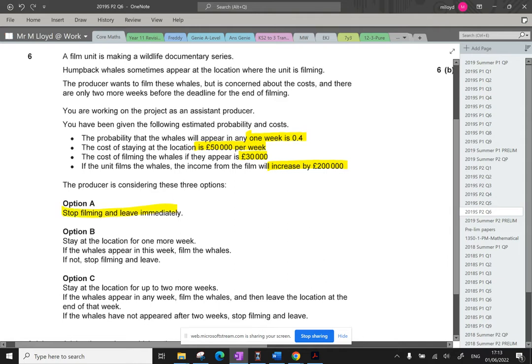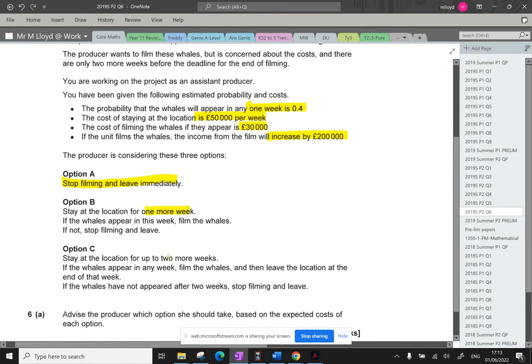Stop filming, leave immediately. Option B: one more week and see how they go. Option C: stay at the location for up to two more weeks. If the whales appear in any week, film the whales and then leave the location at the end of that week. If the whales have not appeared, stop filming and leave. So we need to advise them, and that means we've got to work out all of these options.